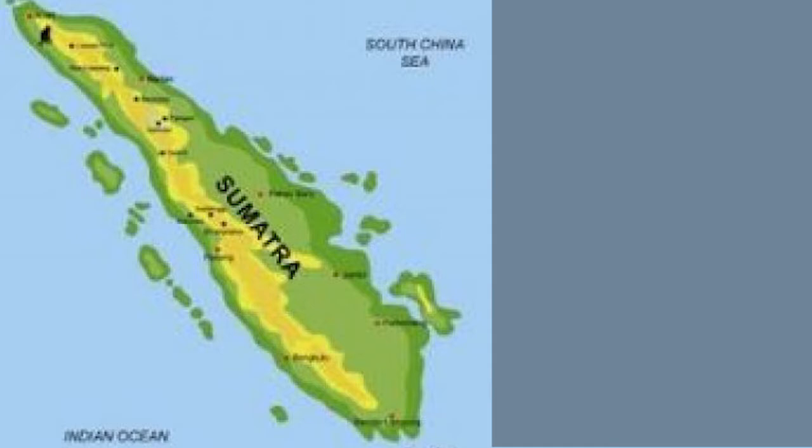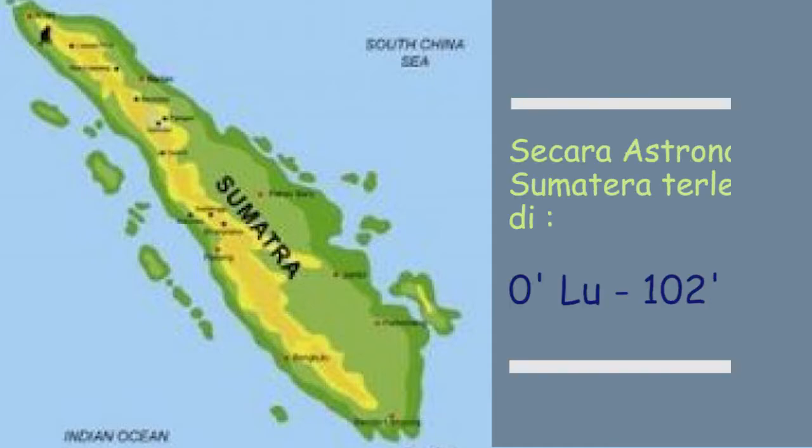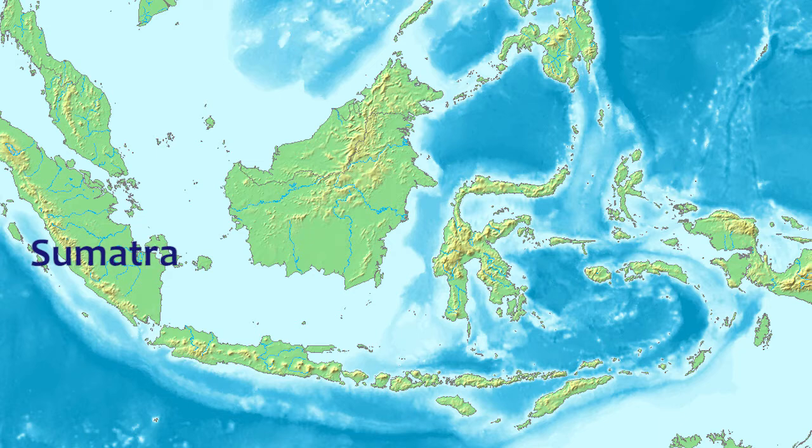Secara astronomis, pulau yang memiliki nama lain Pulau Emas ini terletak di 0 derajat lintang khatulistiwa dan 102 derajat bujur timur. Secara geografis, Pulau Sumatra berada di sebelah barat gugusan Pulau Nusantara.